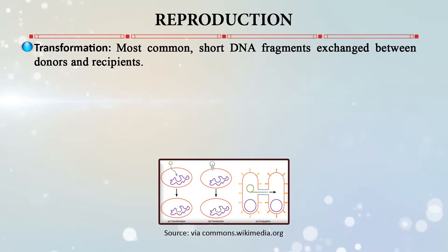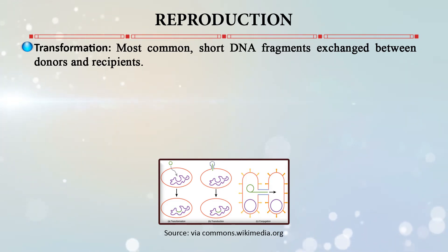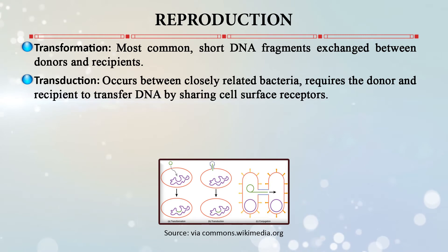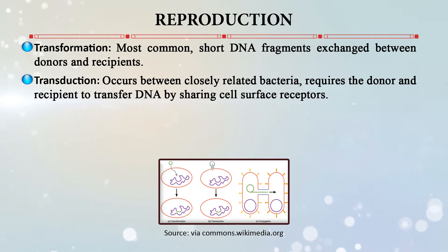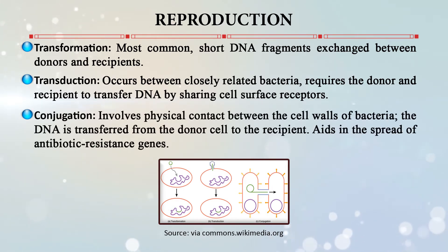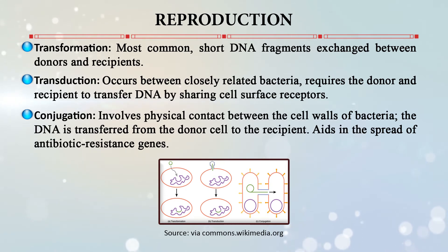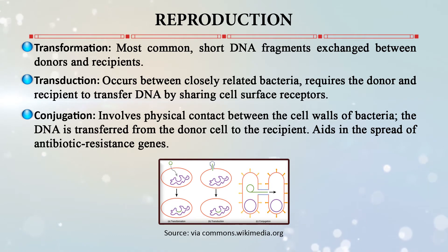In transformation, the most common process, short DNA fragments are exchanged between donor and recipient. In transduction, this occurs between closely related bacteria, requiring the donor and recipient to transfer DNA by sharing cell surface receptors. Conjugation involves physical contact between the cell walls of bacteria, and the DNA is transferred from the donor cell to the recipient. It is conjugation that aids in the spread of antibiotic resistance genes.